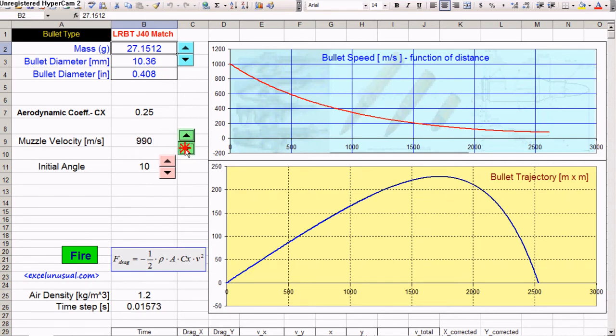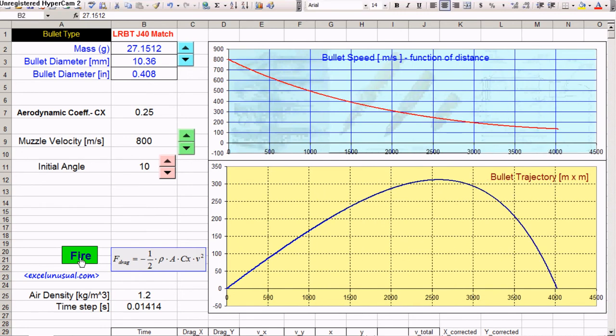And you start with, say, 800 meters per second. Hit fire. You already get to four kilometers. And this bullet will still preserve some more energy than the other one.